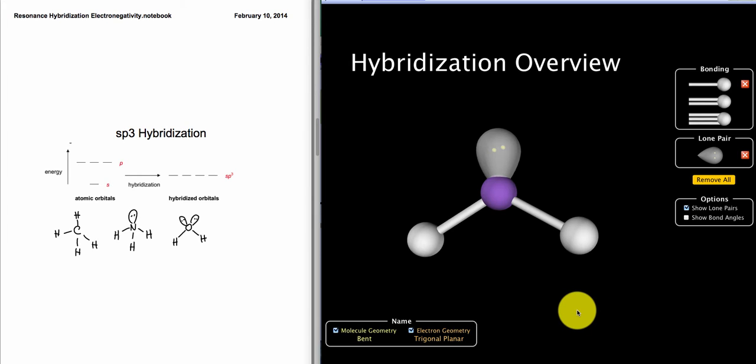Remember that hybridization is a way to help us understand the particular molecular geometries that we see molecules form. This is essentially the consequence of two distinct things.